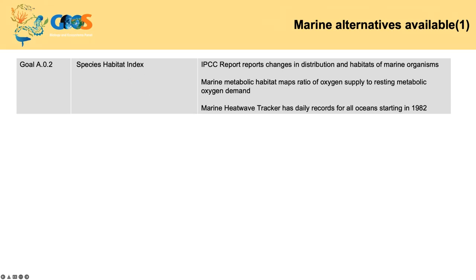On marine alternatives available: the species habitat index, which works very well on terrestrial areas from primarily satellite data, doesn't work so well in the deep sea. But we do have IPCC reports that are very detailed in showing change in distribution of habitats. We can look at marine metabolic habitat maps to understand where the ocean will support biodiversity based on its biological oxygen demand, and we can look at things like marine heatwave trackers, which are already available and can be downloaded by country to understand where marine heatwaves are occurring and affecting habitat.